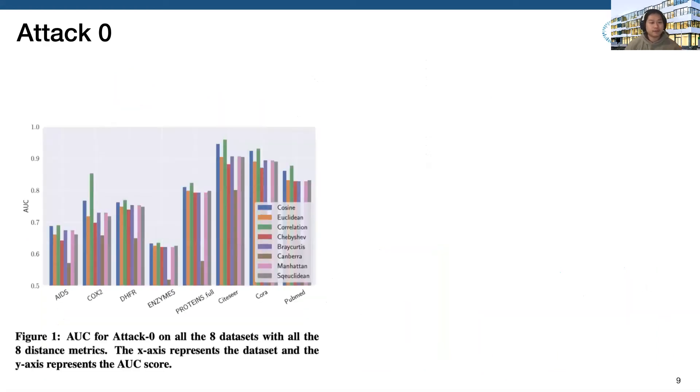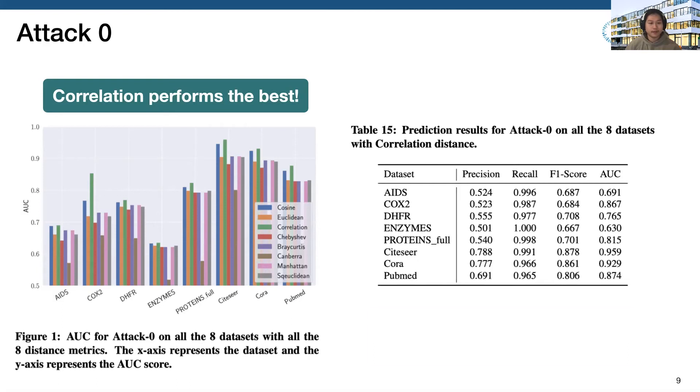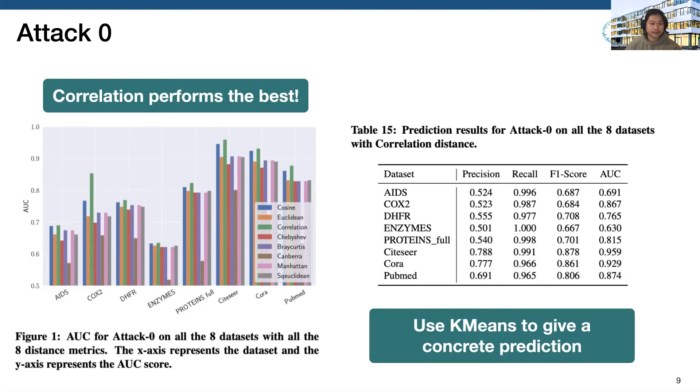Figure one shows the performance of attack zero. The x-axis represents the dataset, and the y-axis represents the AUC score. Here, we test eight different distance matrices, and we find that the correlation performs best across all datasets. For instance, on the CiteSeer dataset, the AUC score for correlation distance is 0.95. However, unsupervised attack cannot provide a concrete prediction. So to tackle this, we can use K-means to give a concrete prediction. Again, for the CiteSeer dataset, we can achieve an F1 score of 0.87.